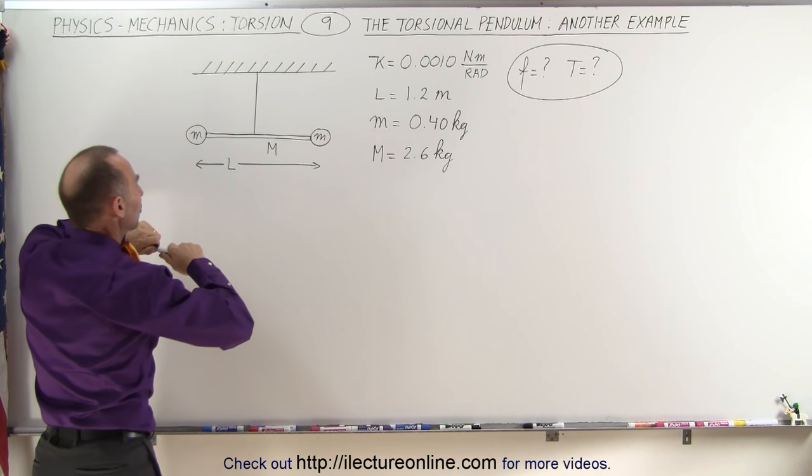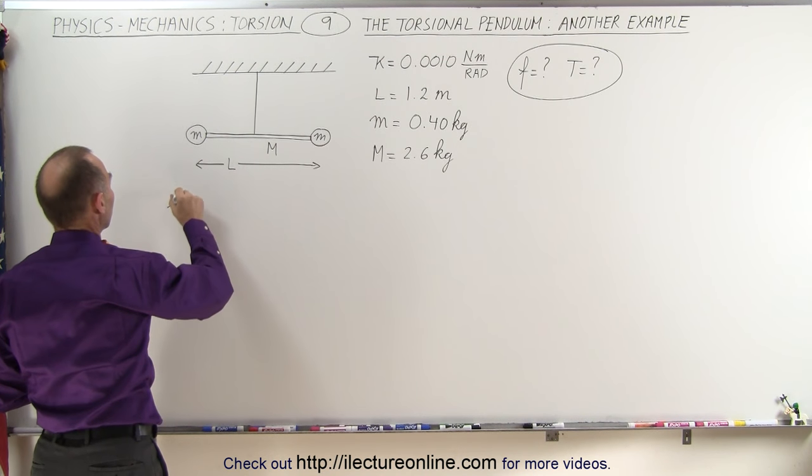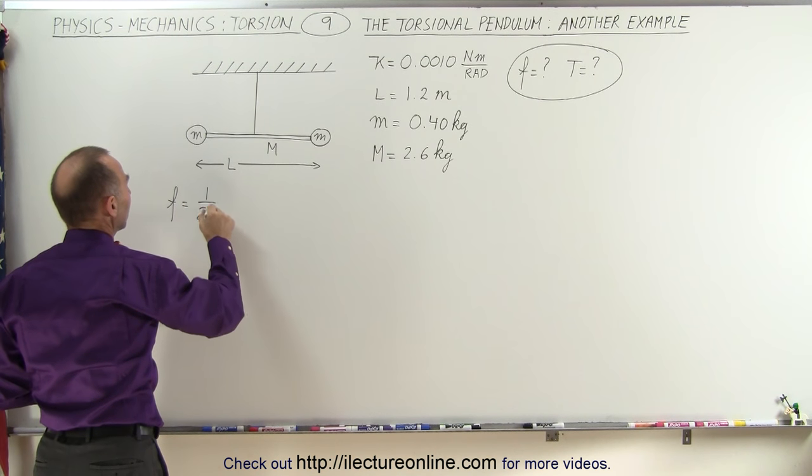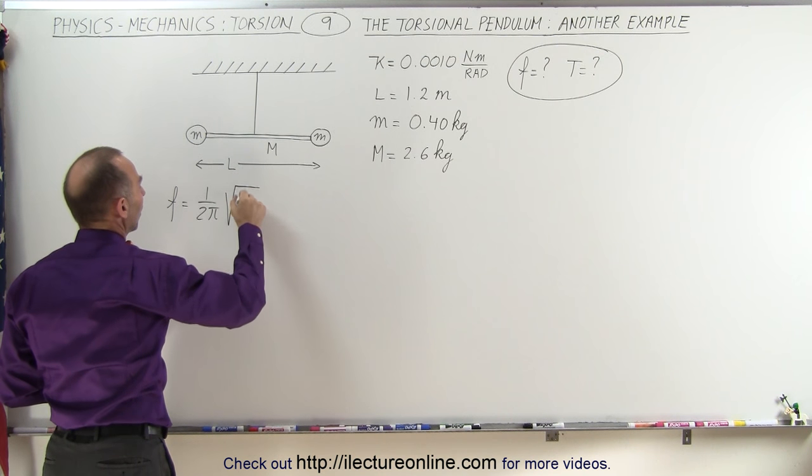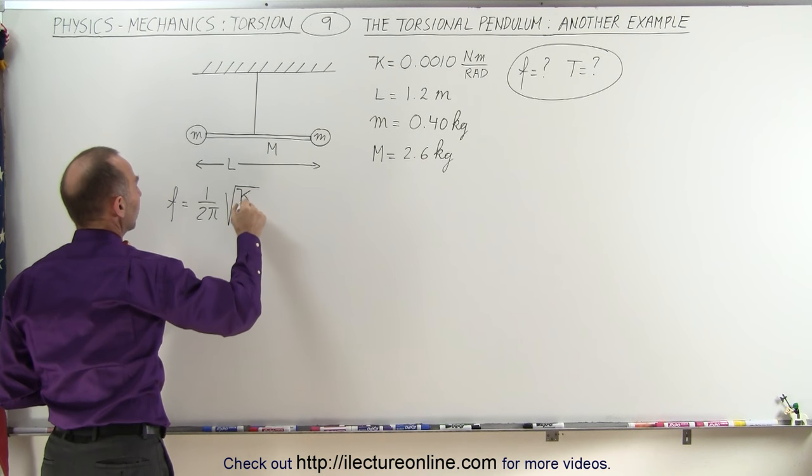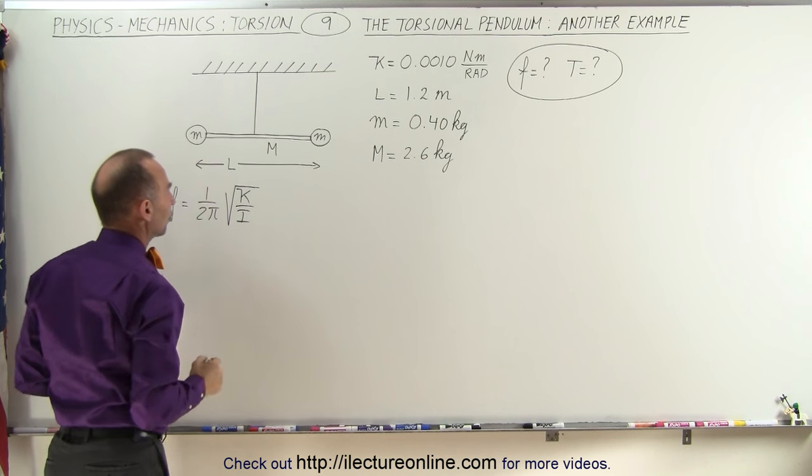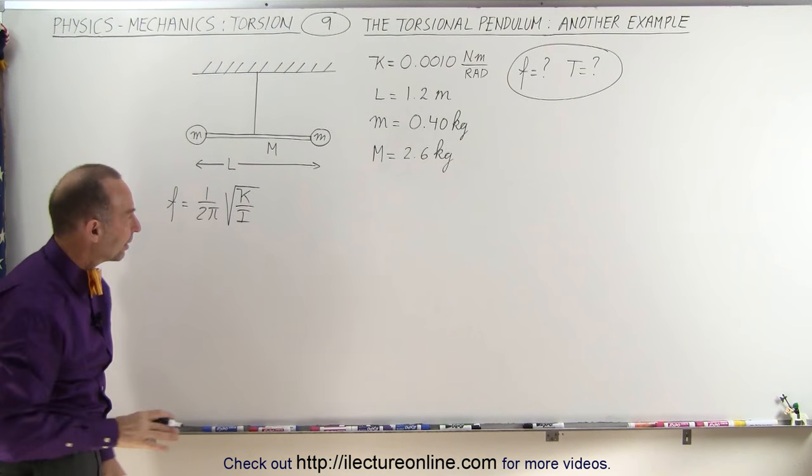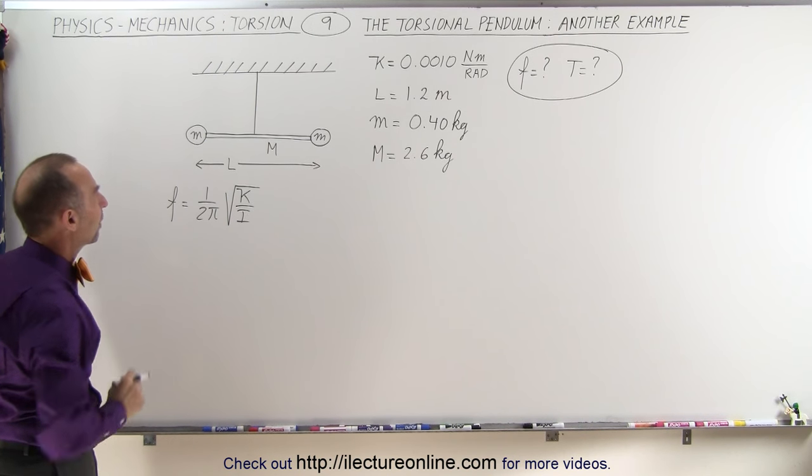We know the equation that we're going to need is as follows. The frequency is equal to 1 over 2π times the square root of the torsional constant divided by the moment of inertia. So let's first find the moment of inertia of this pendulum.